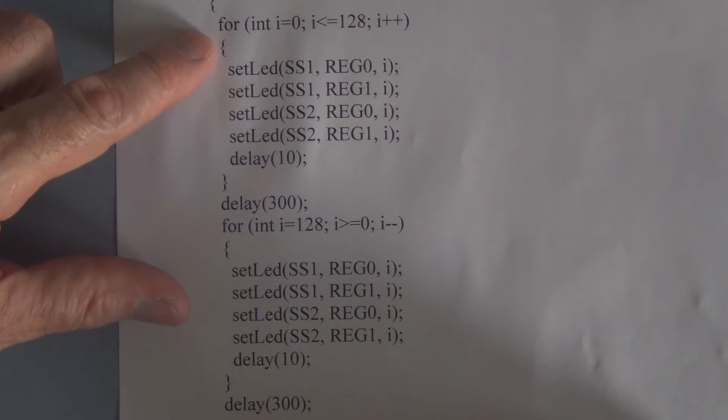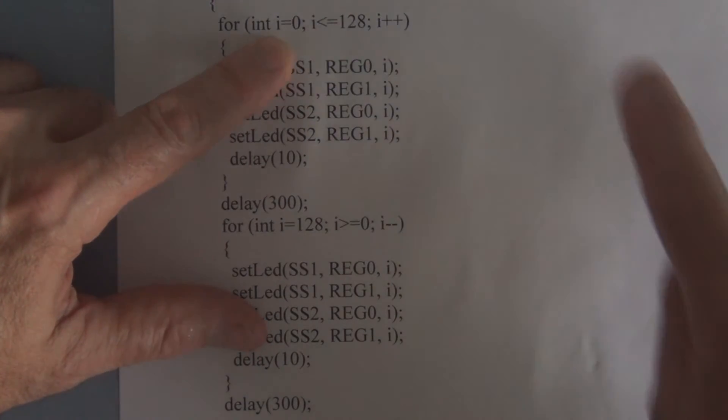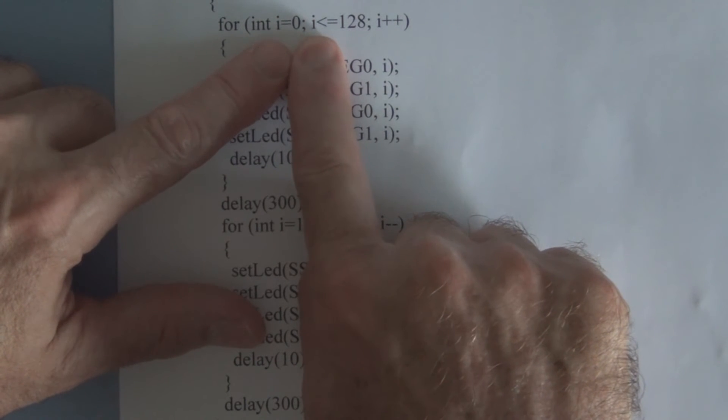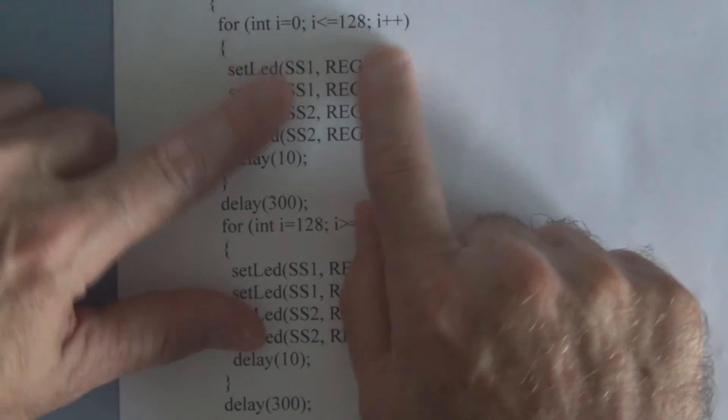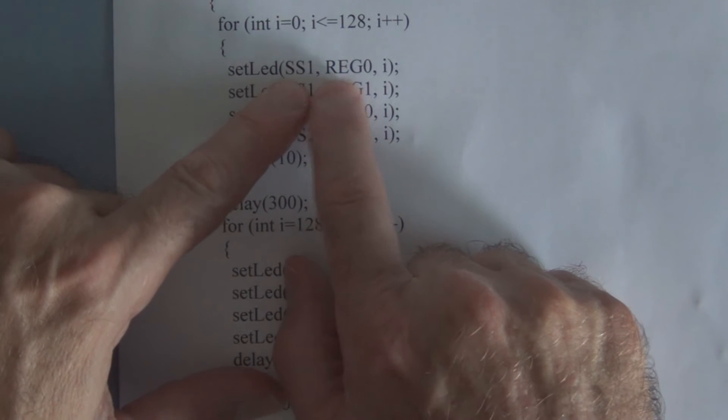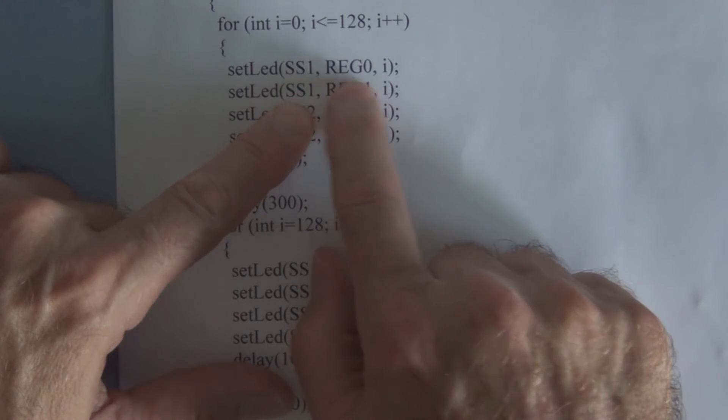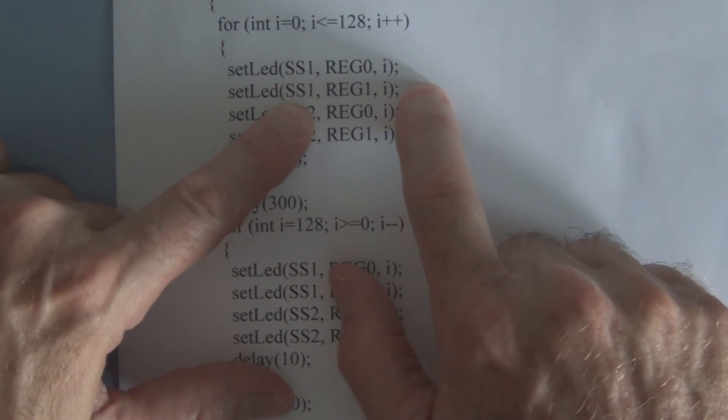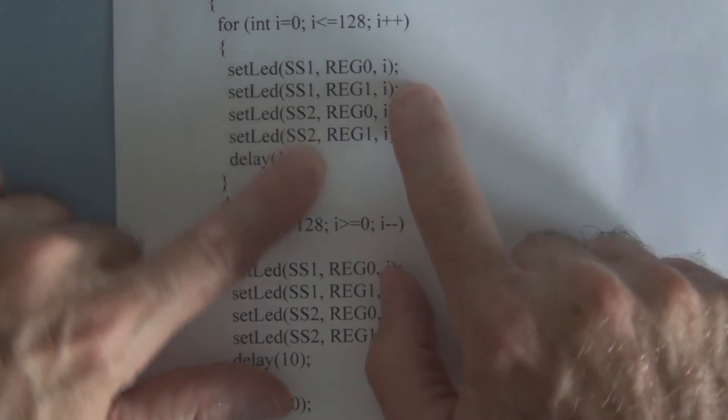Now we have a loop. Integer i is the number for the LED level. In the first instance, we're going to increment it from zero to 128 one bit at a time. While it's doing that, we have to select chip one two times, and each time we're going to use potentiometer zero and then potentiometer one because two of the LEDs are connected to it, and set the level to i.